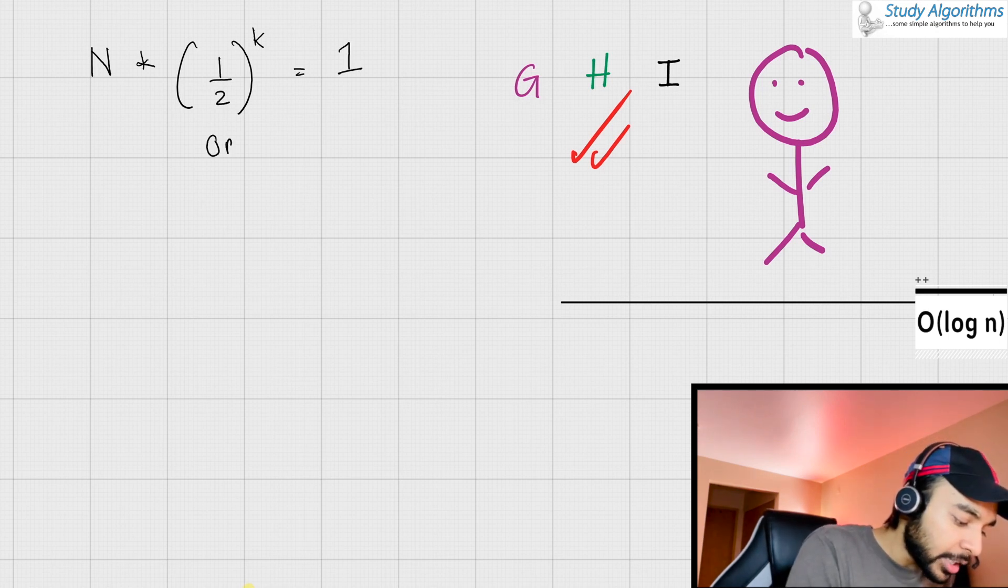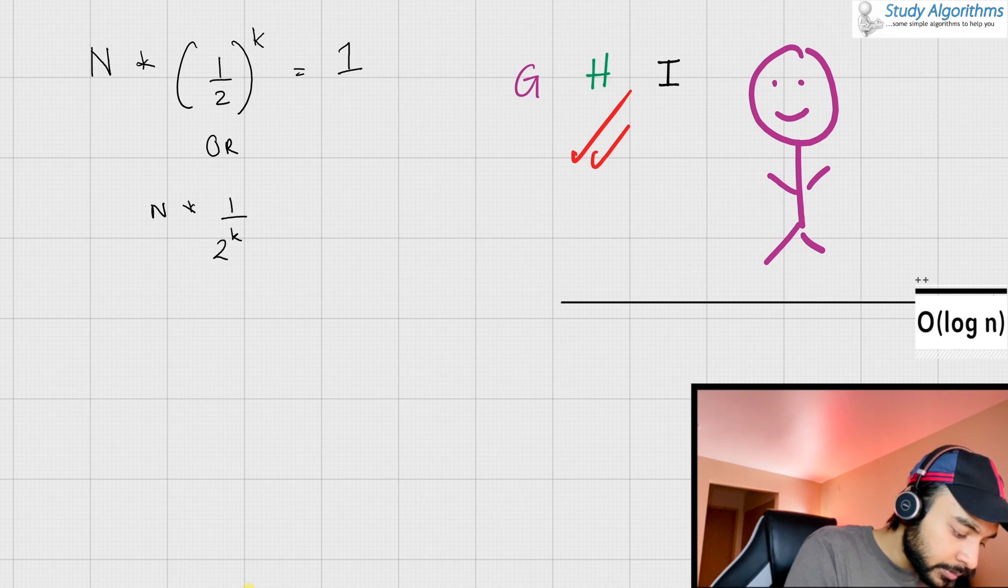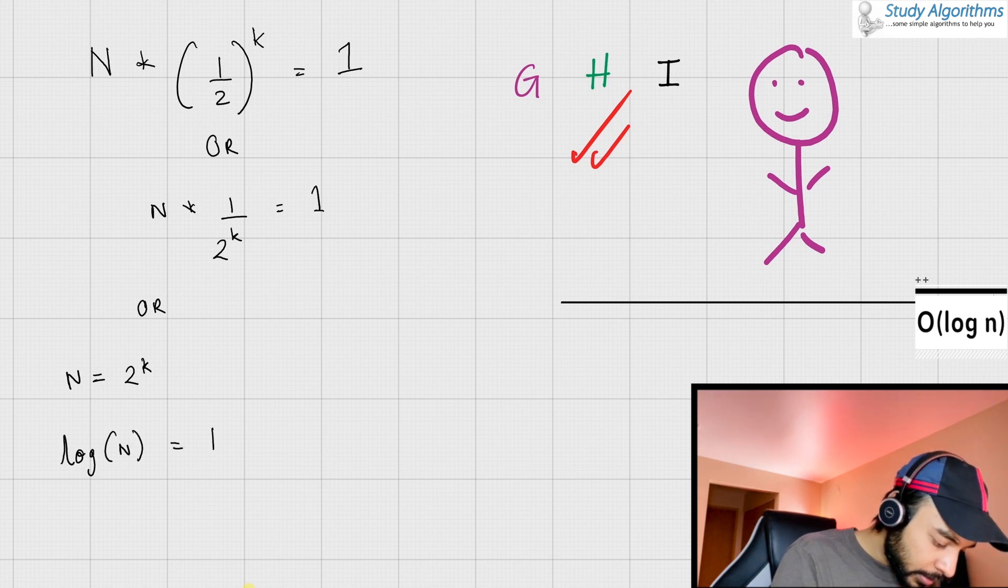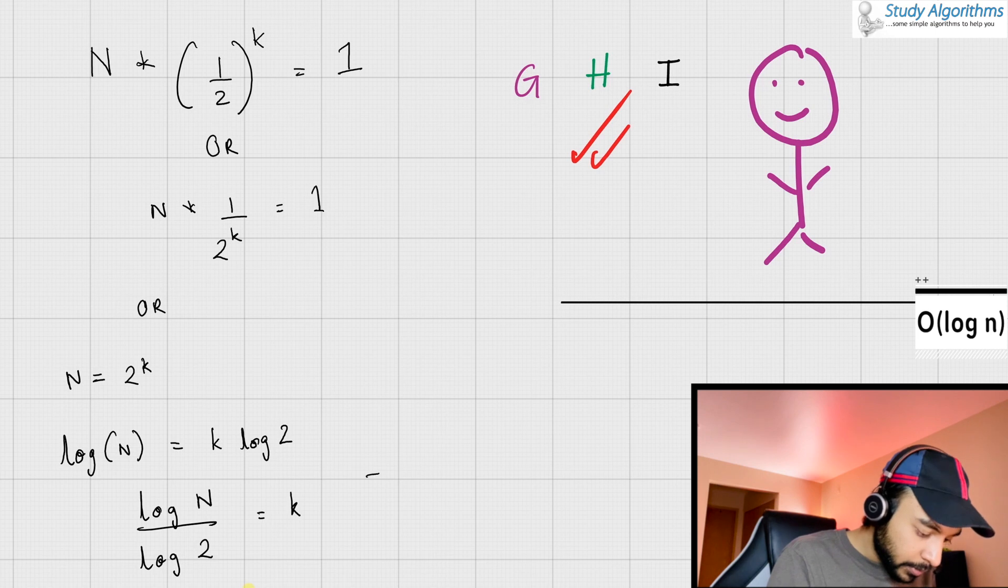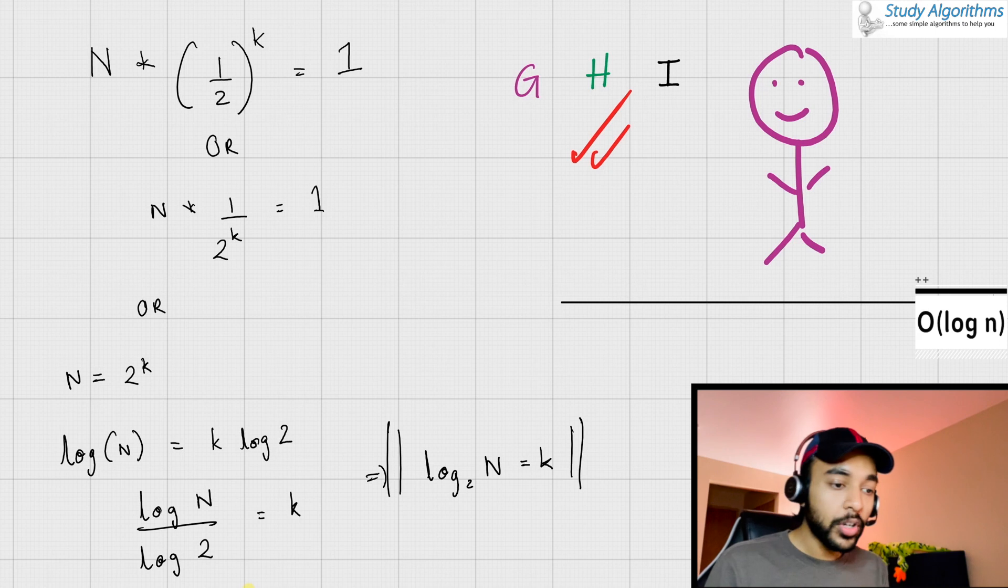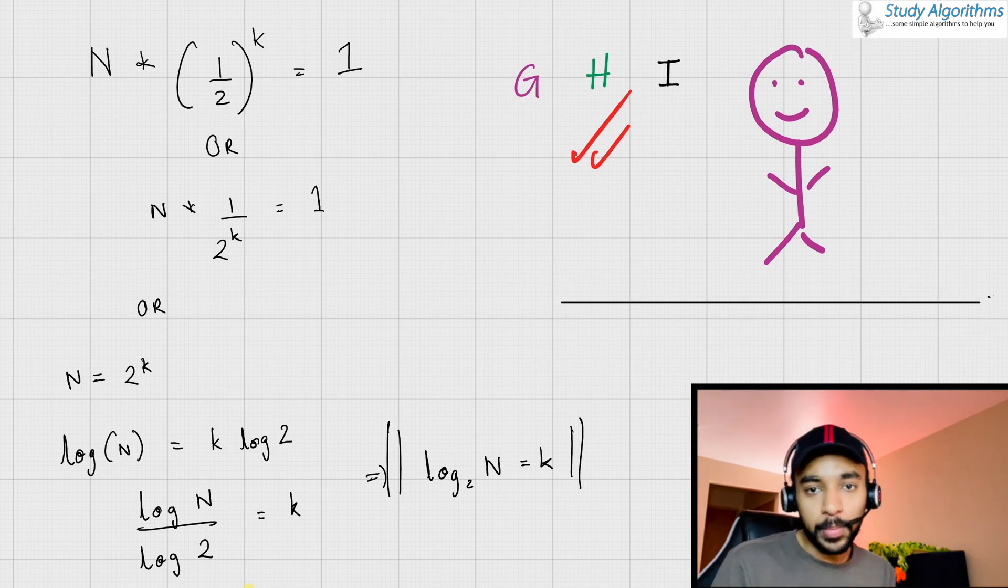Now, we can write this equation as N divided by 2^K equals 1, taking log on both the sides, or K equals log N. So, this is known as order of log N complexity.